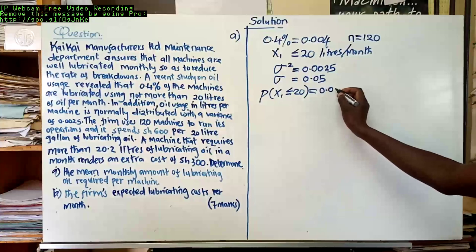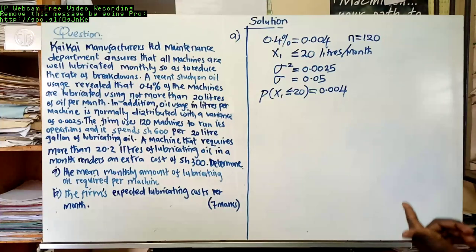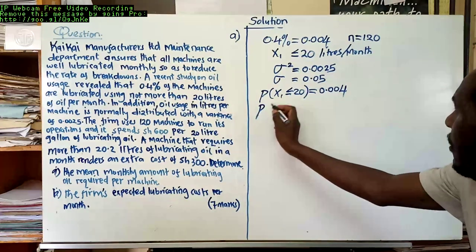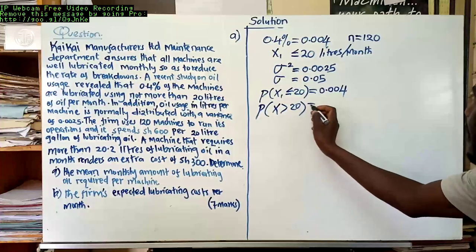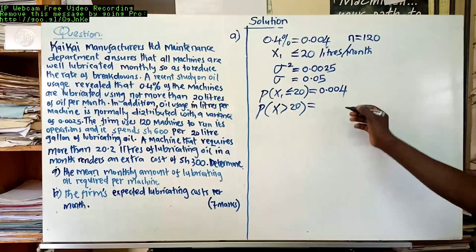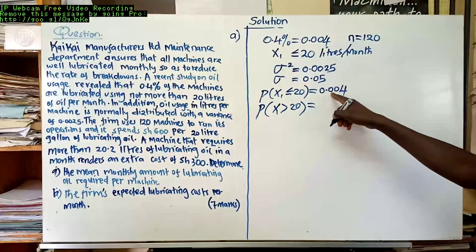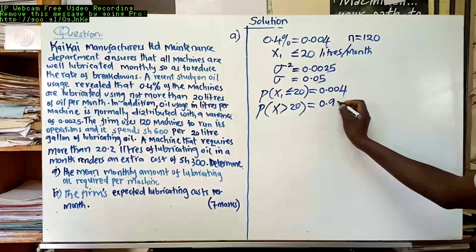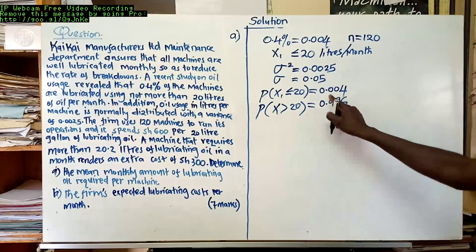From that we can also learn that the probability of a machine spending more than 20 liters per month: total probability totals to one, so probability that X is greater than 20 is 1 minus 0.004, which is 0.996.